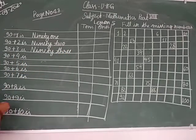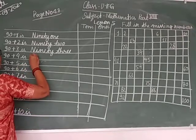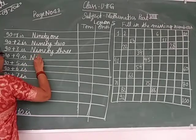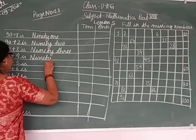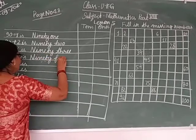90 plus 4 is 94. It's calling it as ninety, N-I-N-E-T-Y, ninety, F-O-U-R.